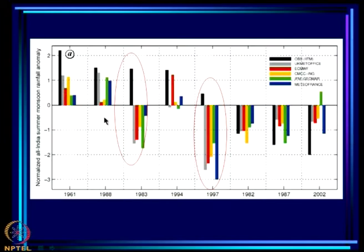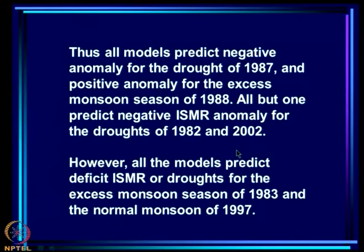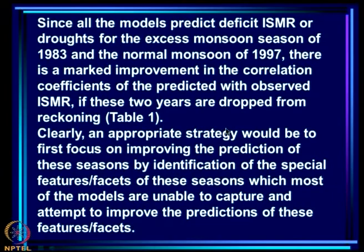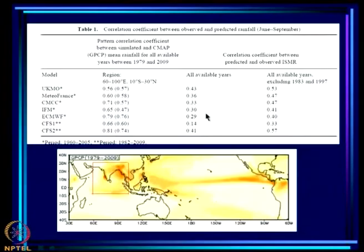All models predict negative anomalies for the drought of 1987 and positive for the excess of 1988. All but one predict negative ISMR anomaly for the droughts of 1982 and 2002. However, all models predict deficit ISMR for the excess monsoon season of 1983 and normal monsoon of 1997. Since all models predict deficit for these two years, there is a marked improvement in correlation coefficients of predicted with observed ISMR if these 2 years are dropped.